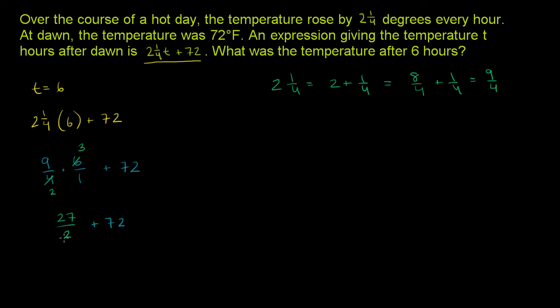Now, we can convert this right here back into a mixed number. 2 goes into, let me do it over here on the side. So if you wanted to convert this into a mixed number, you take 2 into 27. 2 goes into, well, 2 goes into 2 one time. 1 times 2 is 2, you subtract, you get a 0, bring down the 7.